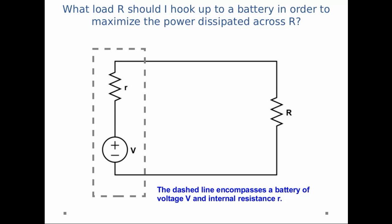So I give you a circuit as you see in this diagram. It consists of a battery with a voltage V and an internal resistance little r, and it's hooked up to a load capital R. Capital R is just the resistance of the load. My question is what load R should I hook up to the battery in order to maximize the power dissipated across capital R.